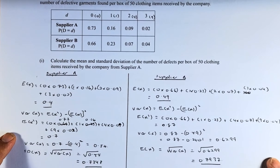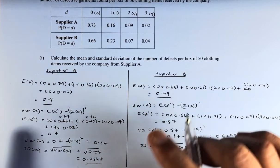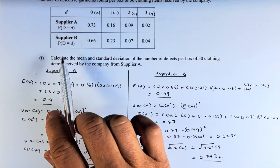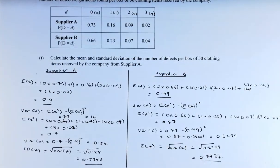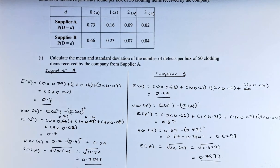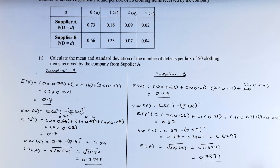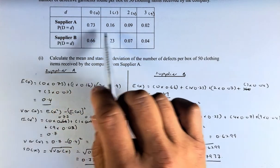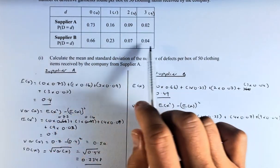We are going to push up a bit because we need to answer the question. There is the box with Supplier A and Supplier B, and there is D with values 0, 1, 2, 3, and the probability in the box. Calculate the mean and standard deviation of the number of defects per box of 50 clothing items received by the company from Supplier A. We look at Supplier A first and then later we are going to do Supplier B.